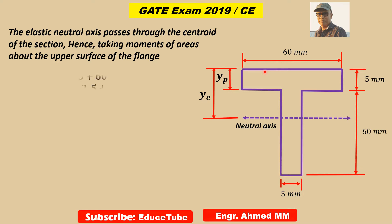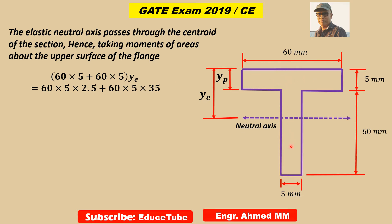So what I get — this whole area will be 60 multiplied by 5, plus 60 multiplied by 5, meaning the whole area for the flange and web. The distance will be Ye, because I am taking moment about this line, and this whole area centroid is working on this line. So I have to take this distance Ye.